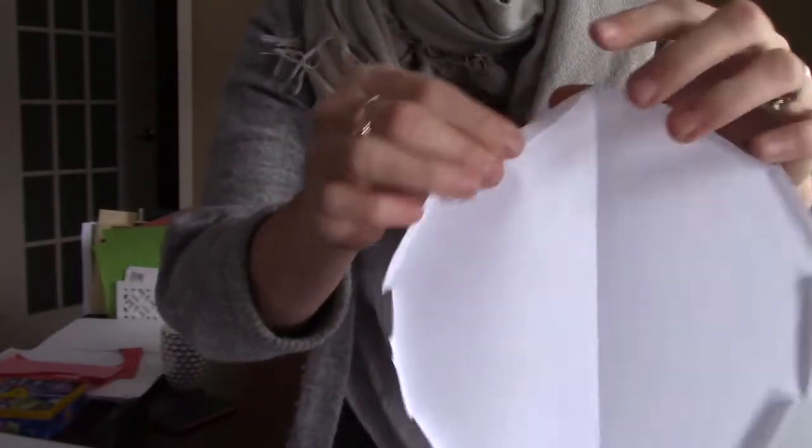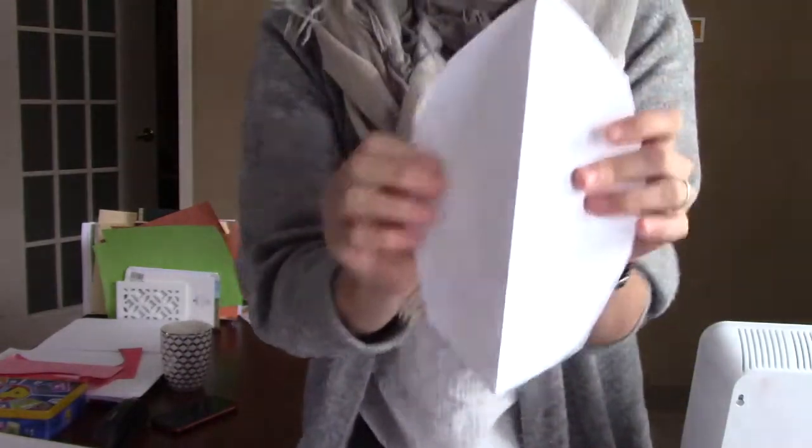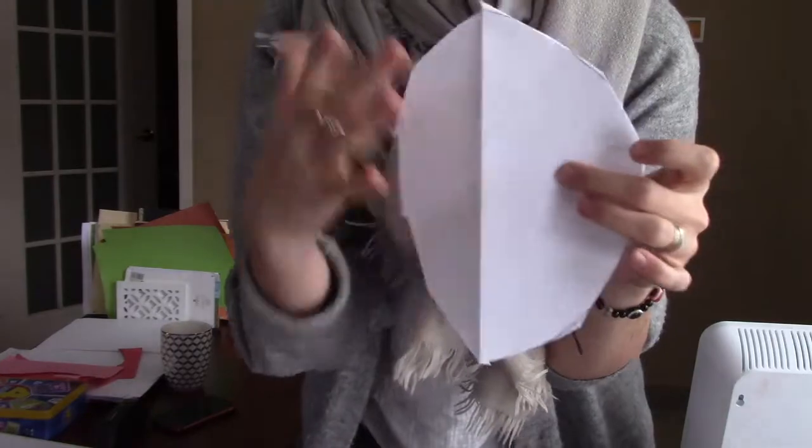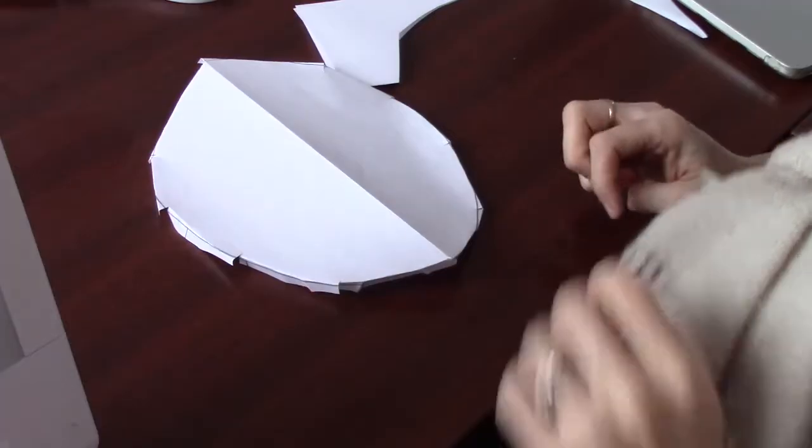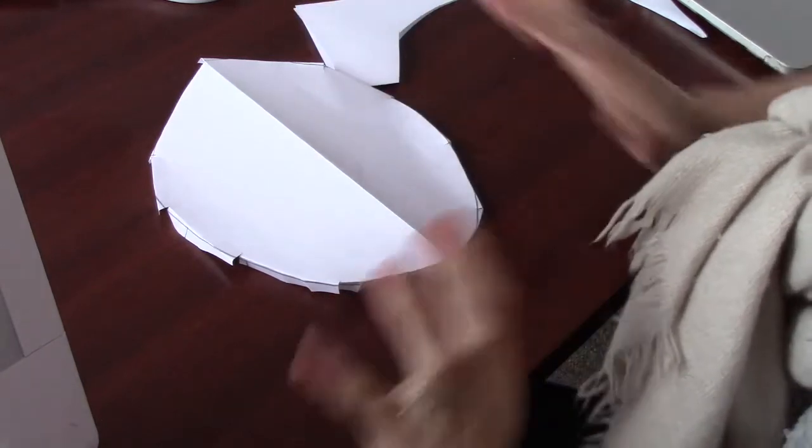We are going to put glue on those tabs. And we are going to glue our mask eventually so it's like this. But first we need to decorate it while it's flat. All right, so this is the foundation of our mask.